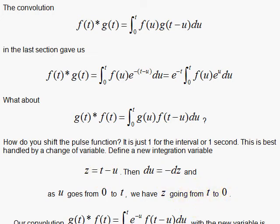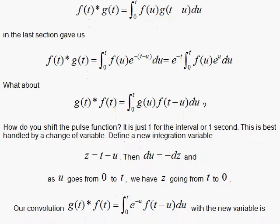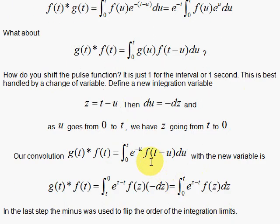So doing that, we look at this equation that has the g of u put in there. Now the g of u is our exponential, e to the minus u.